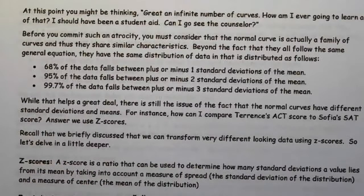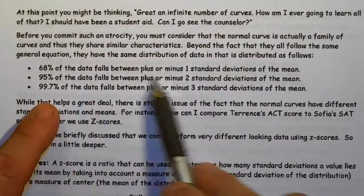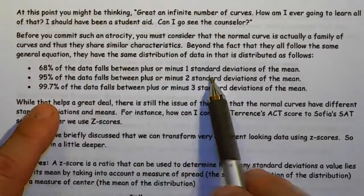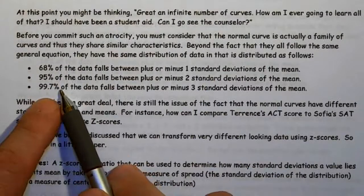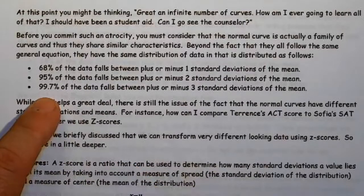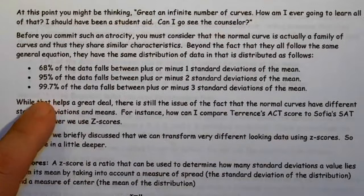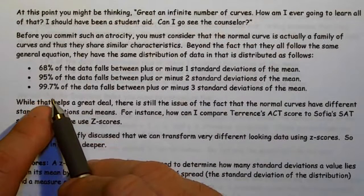68% of the data falls between plus or minus one standard deviation, 95% falls between plus or minus two, and 99.7% falls between plus or minus three, which is why we say it's really rare if you're beyond three standard deviations, because that's a very small area that we're talking about.